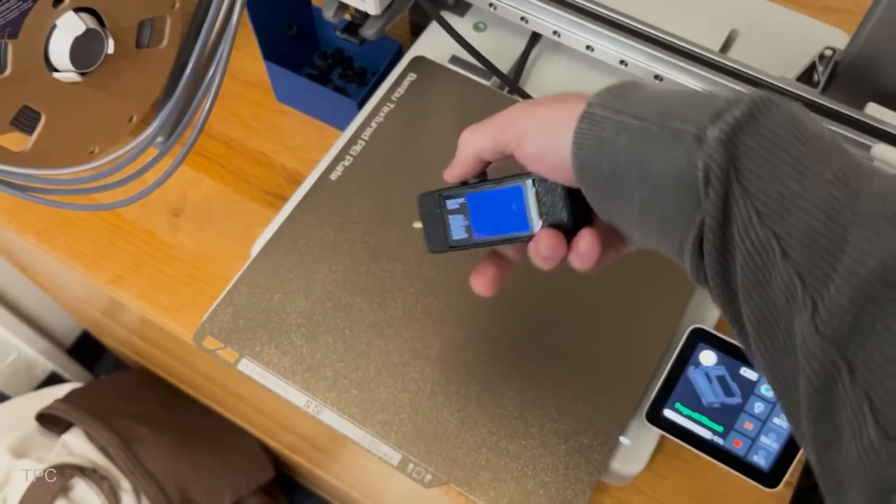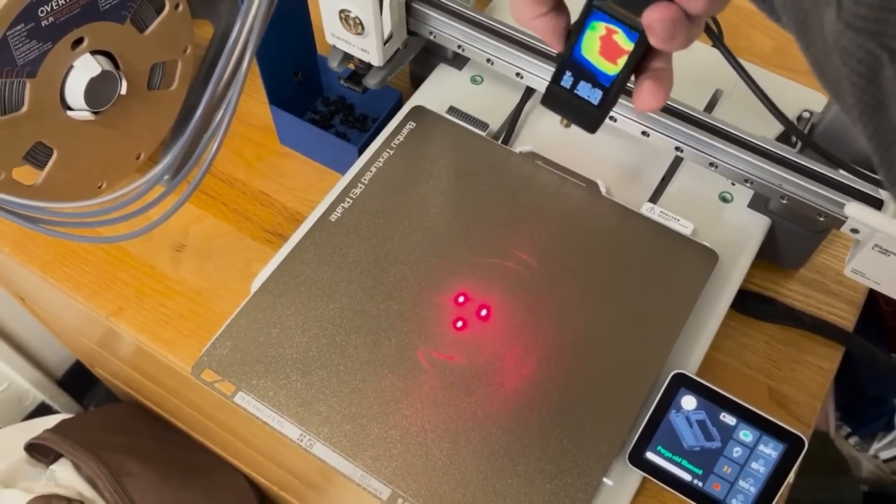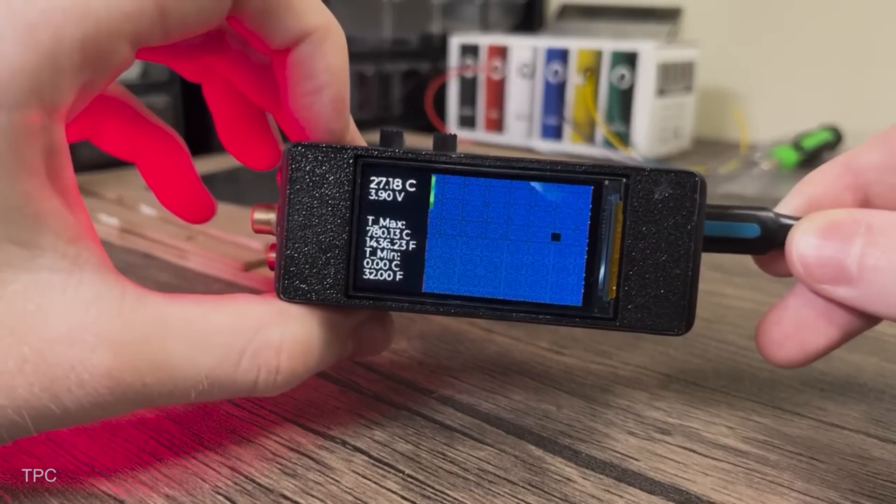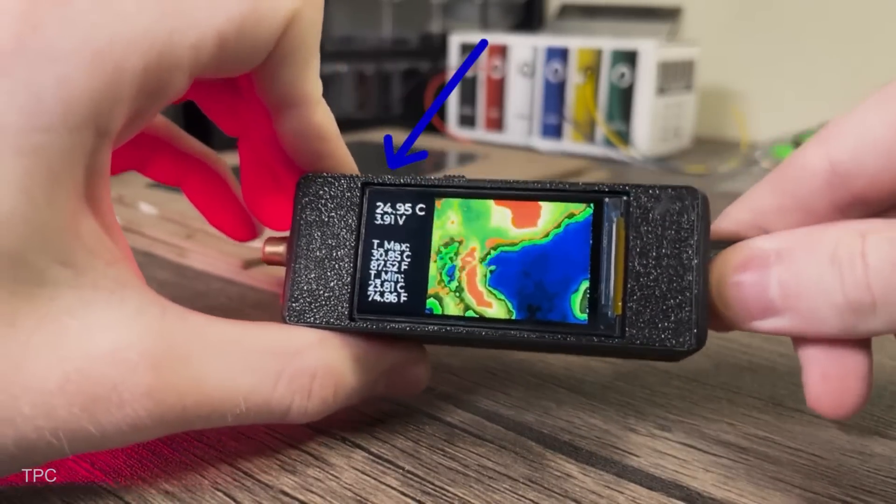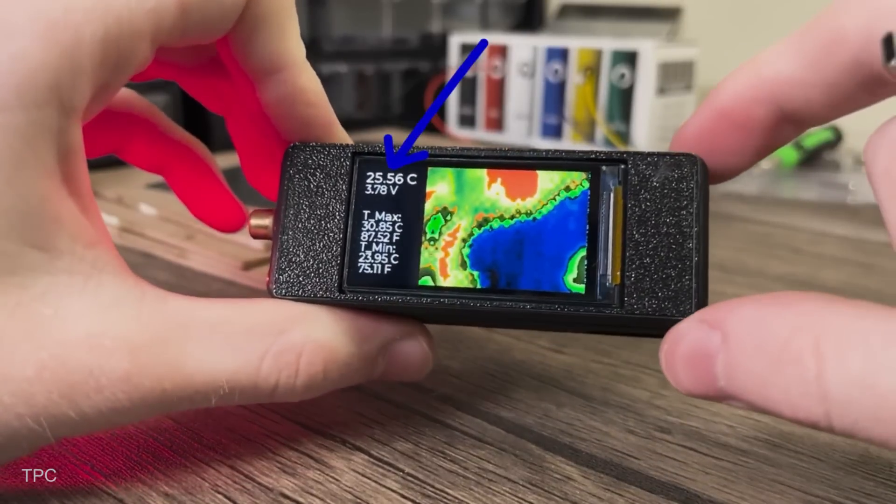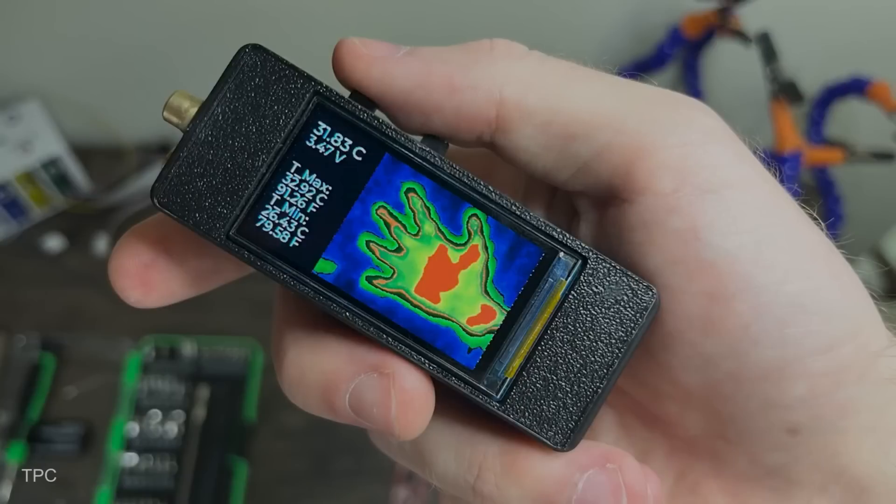A unique aim assist system with three laser dots helps pinpoint the exact spot you're measuring. The small screen displays live thermal images along with maximum, minimum, and center point temperature readings. Plus, with the ability to freeze the display, you can easily analyze temperature readings without rushing.